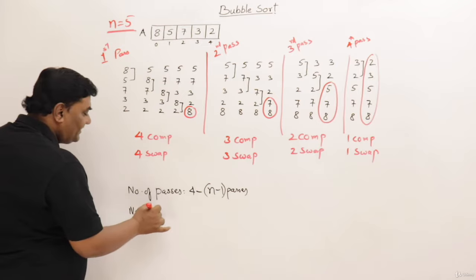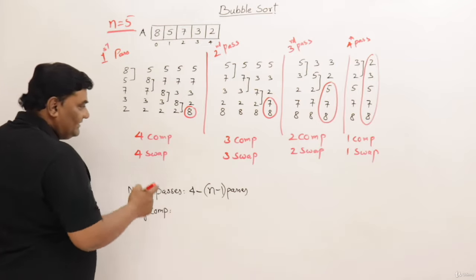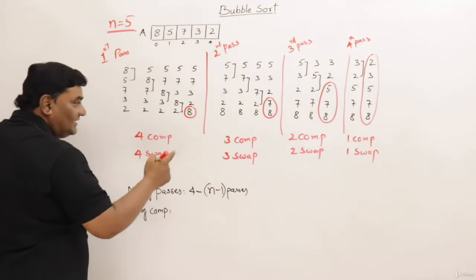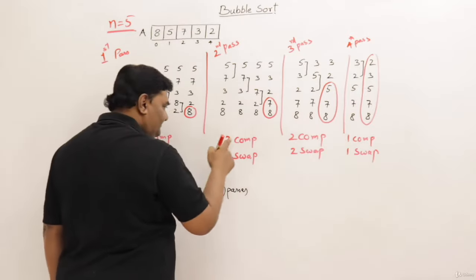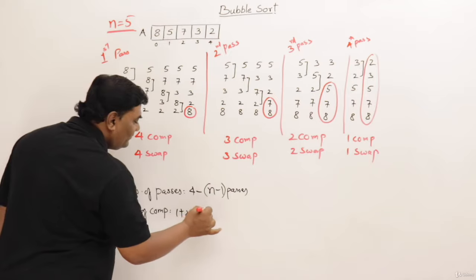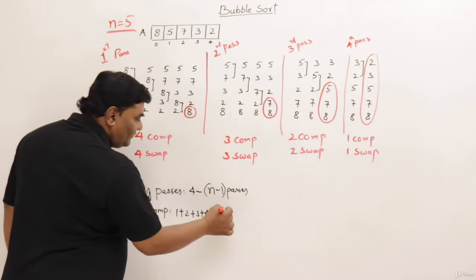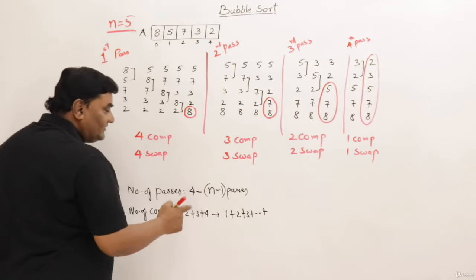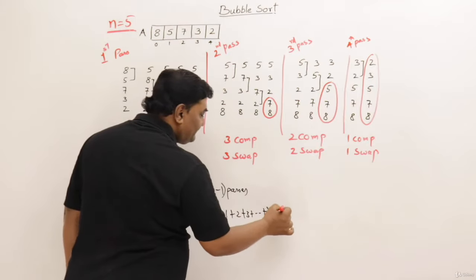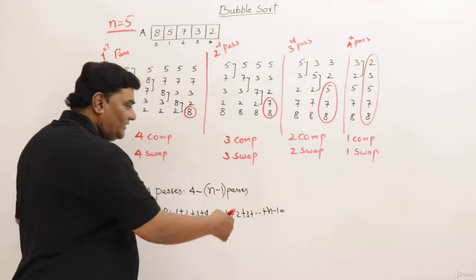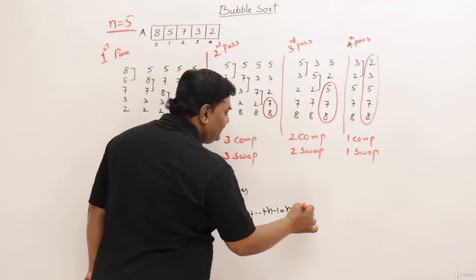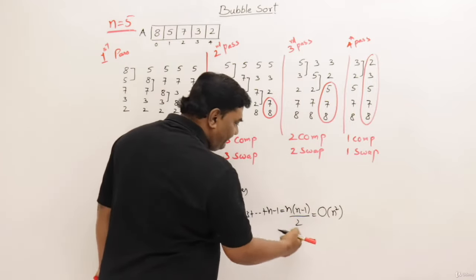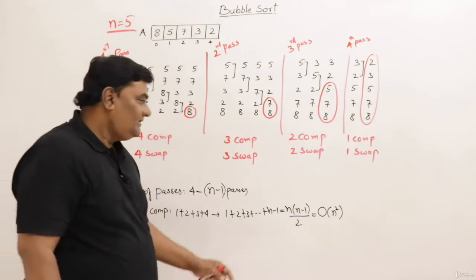Now let us find the number of comparisons. Counting from each pass: 4, 3, 2, 1 — or equivalently 1 plus 2 plus 3 plus 4. For n elements it is 1 plus 2 plus 3 plus ... up to n minus 1. This is the sum of the first n minus 1 natural numbers, which equals n times (n minus 1) divided by 2. So the number of comparisons is order of n squared.